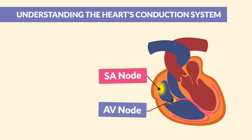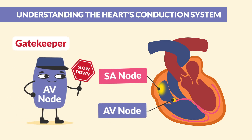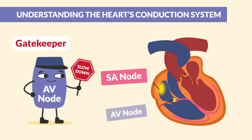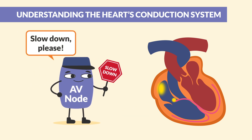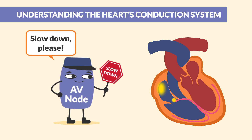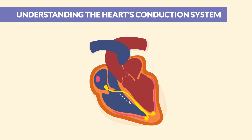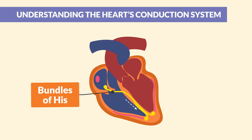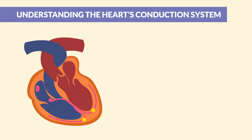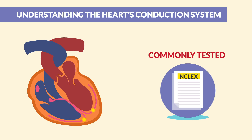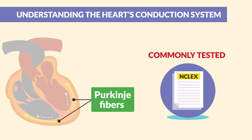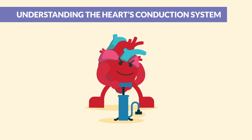The signal then travels to the AV node, aka the gatekeeper. It slows things down just a little bit, making sure the atria fully contracts before passing that juice to the ventricles, so that everything is smooth sailing. Then the signal speeds through the bundle of His, which is the only electrical connection between the atria and the ventricles — and hint, hint, it's a commonly tested NCLEX question. The signal heads down to the right and left bundle branches, and finally hits the Purkinje fibers. Boom, your heart is ready to pump like the pro it is.